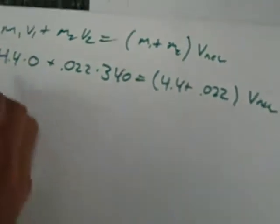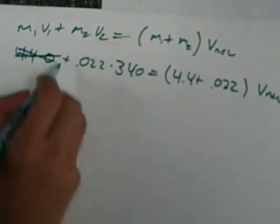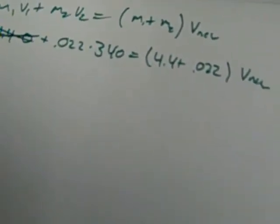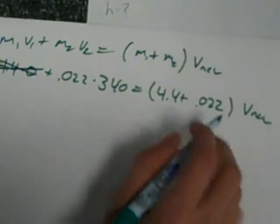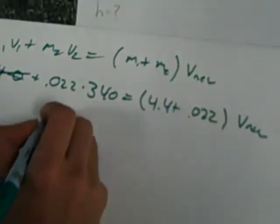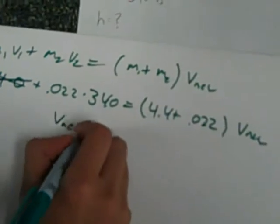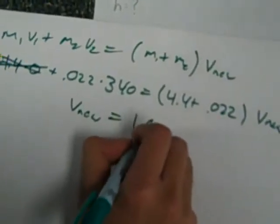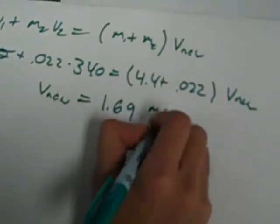This will be 0, so we can just cross that out. Solving for this v, it comes out to be 1.69 meters per second.